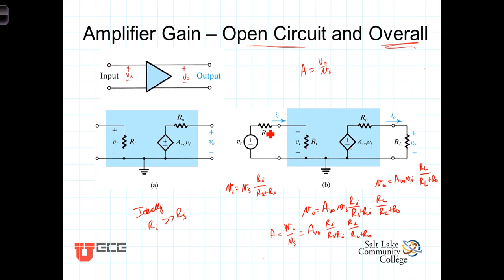On the other hand, we would like R_L to be much greater than the output resistance. Or we would like R_out to be much less than R_L, so that once again, the significant portion of this open circuit voltage here ends up across the load and not being dropped across R_out.